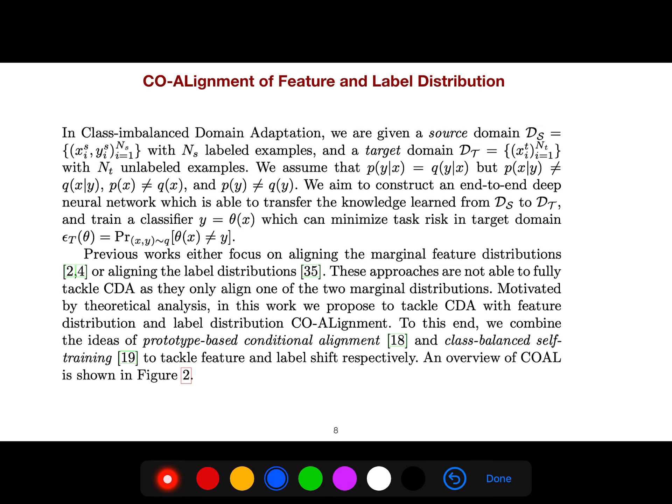Co-alignment of feature and label distribution. We assume that their probability of distributions p(y|x) given your data is the same, but the probability of p(x|y) is not equal to the probability of x condition on the label. We aim to construct an end-to-end deep neural network which is able to transfer the knowledge learned from source domain to target domain.